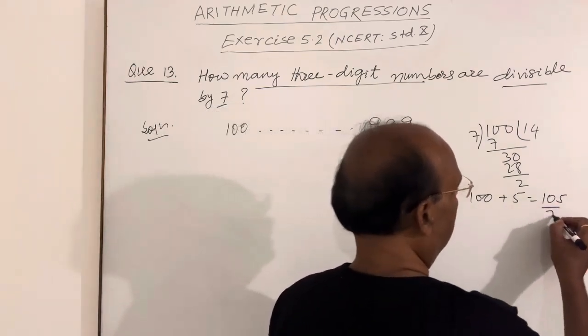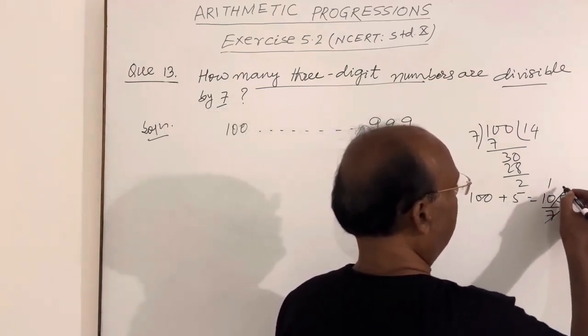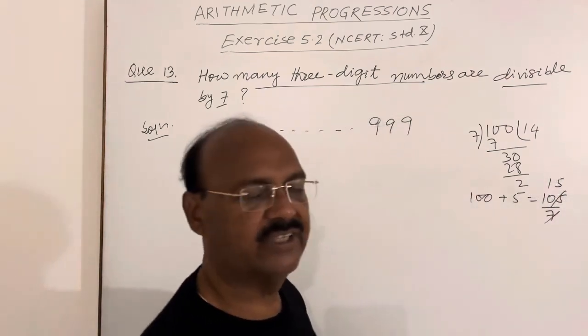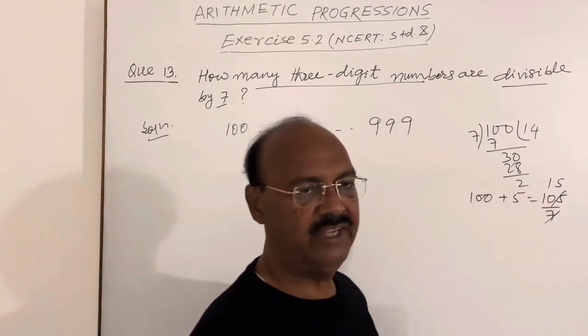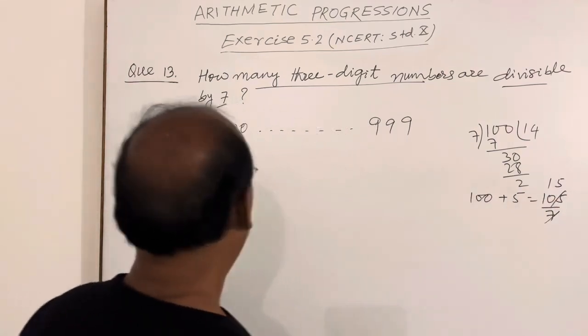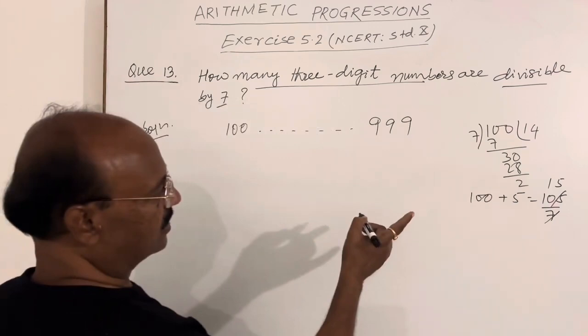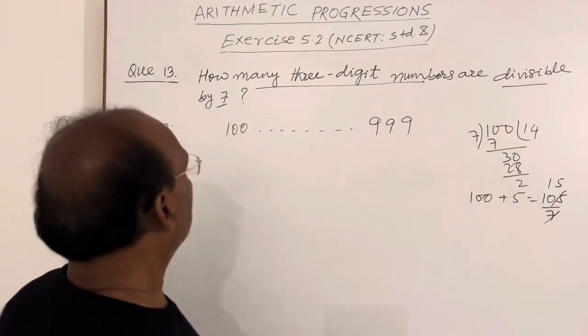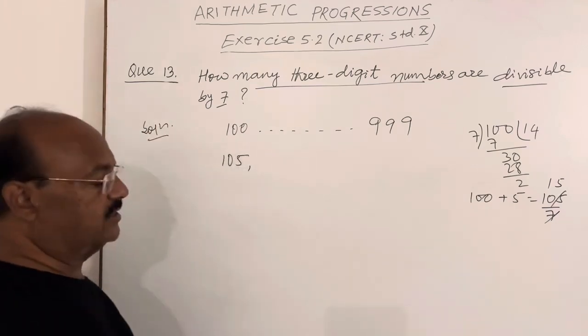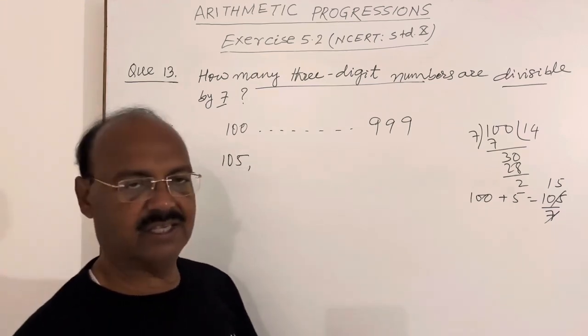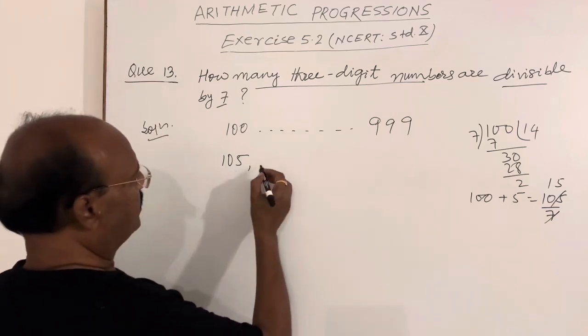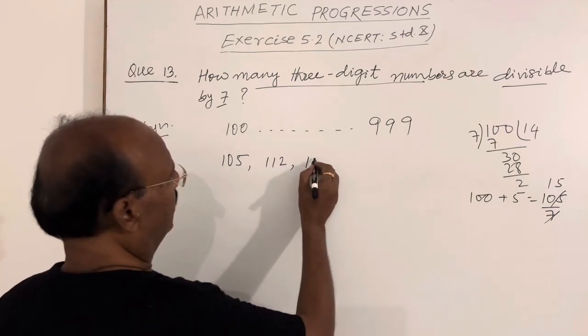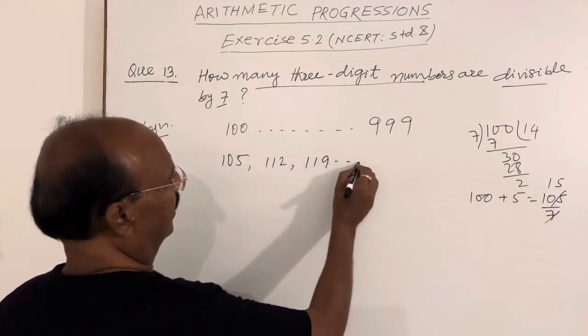Now you can check here: 7 times 1 is 7, and 7 times 5 is 35, correct. So now it becomes divisible by 7. In this case, three-digit numbers which are divisible by 7 will start from 105, and the next number we can add again 7: 105 plus 7 equals 112, plus 8 equals 119, and so on.